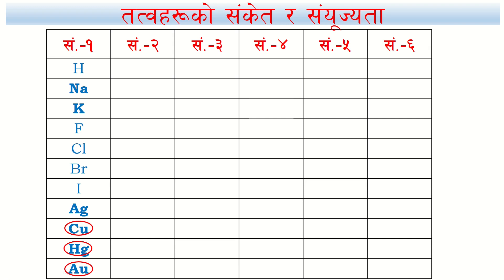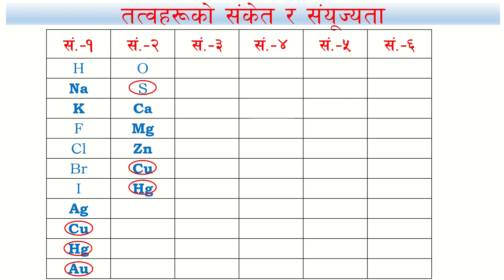I will explain valency. Copper, mercury, and gold have one valency. The elements with valency 2 are: oxygen, sulfur, calcium, magnesium, zinc, copper, mercury, cobalt, and iron. These include both metals and non-metals with valency 2.